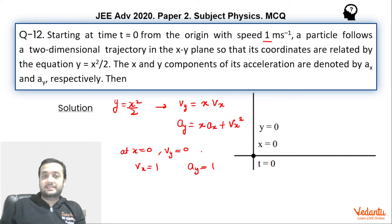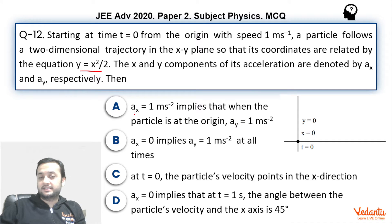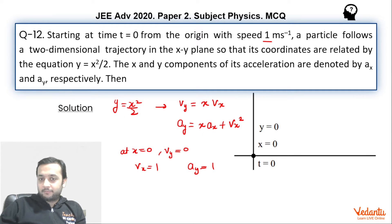So that is why this option is slightly ambiguous because here it is saying that ax equals to 1 implies that ay will become 1 at origin. But if you see, I am not even concerned about the value of ax. Whatever is the value of ax, ay is certainly 1 at origin.